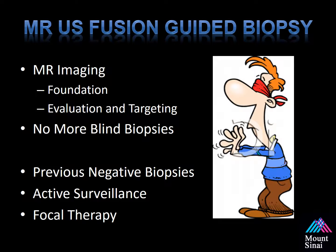Also, targeting specific areas improves sampling, especially in men found to have low-grade, low-volume disease. Not all of them are candidates for active surveillance, and multiparametric imaging can help.